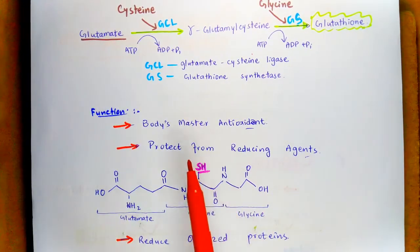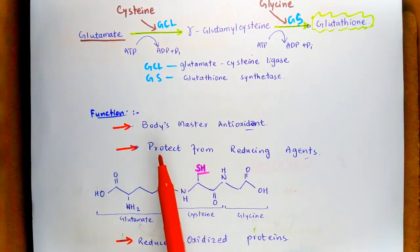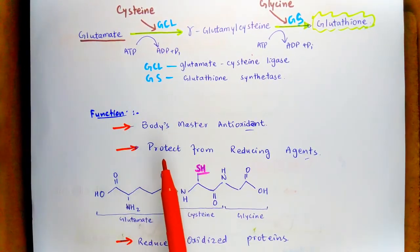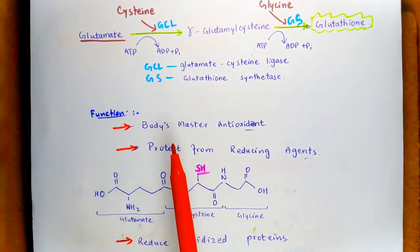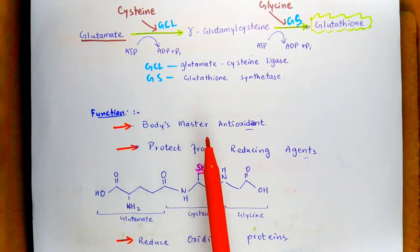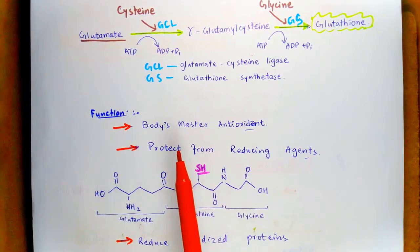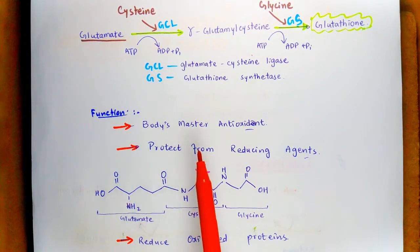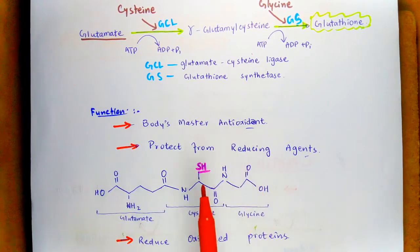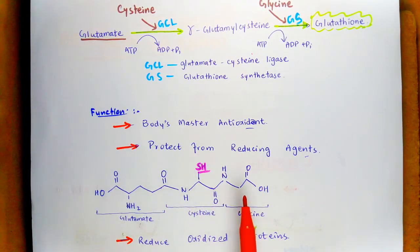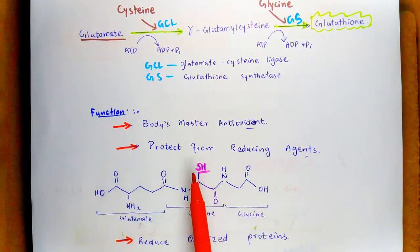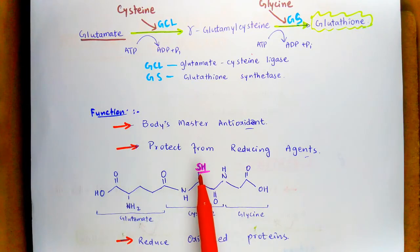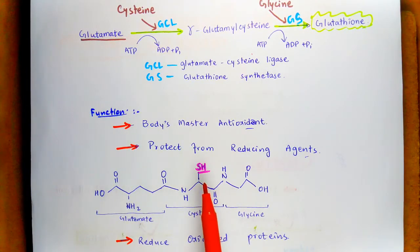Now the functions of glutathione: glutathione is often referred to as the body's master antioxidant. It is present within the liver and serves to protect the body from damaging agents. Here is the structure of glutathione — it has an SH (sulfhydryl) group that acts like flypaper, and all the bad things in the body stick onto it.